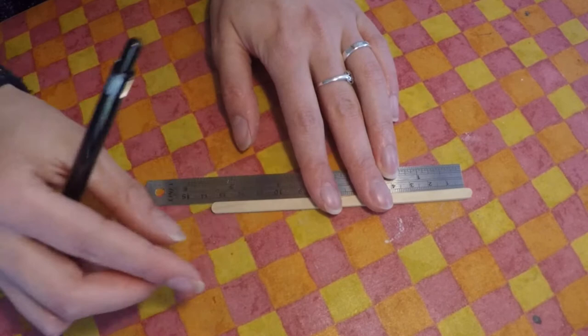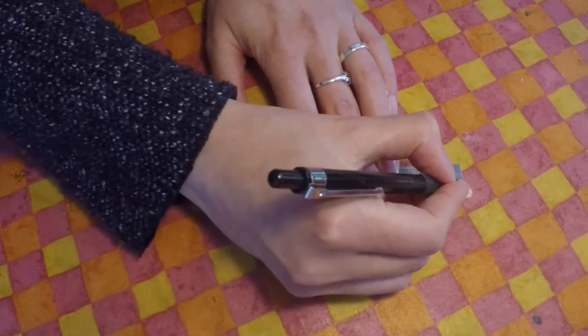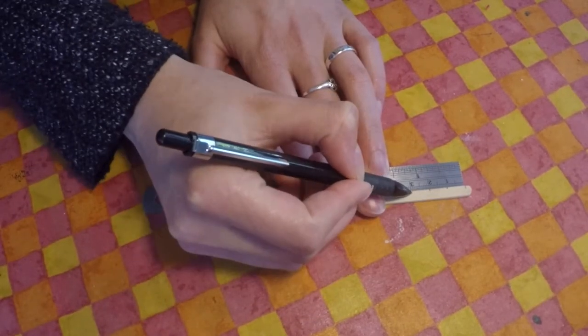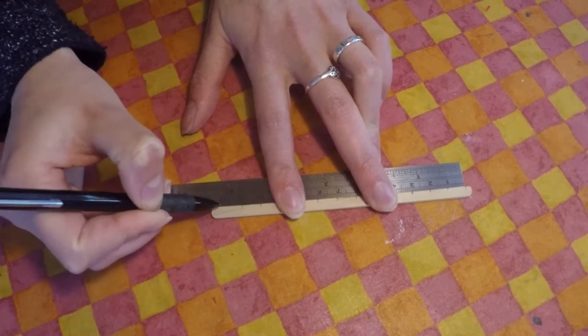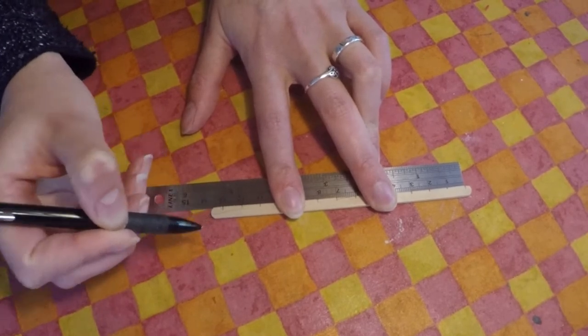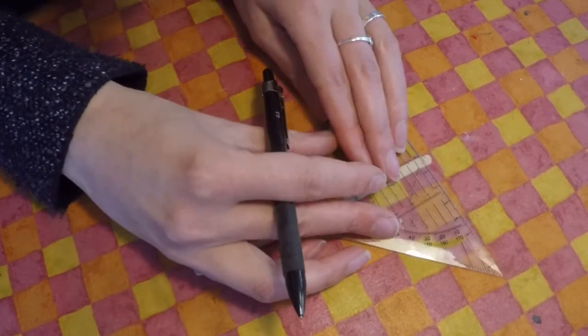I measured out how big I wanted them to be using Alice as a reference. I'm sorry if it seems like there's an earthquake happening in this video. My crafting table is about as stable as an old lady waiting for a hip replacement.